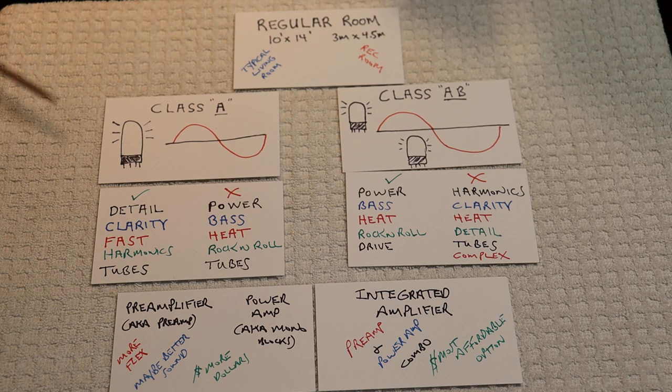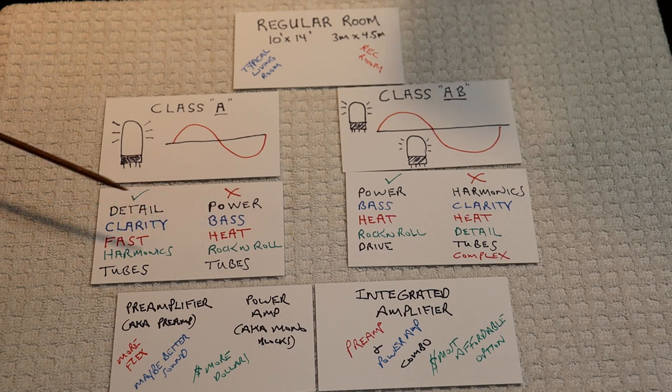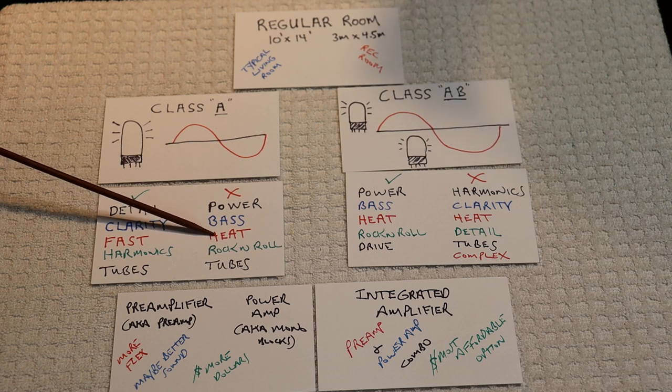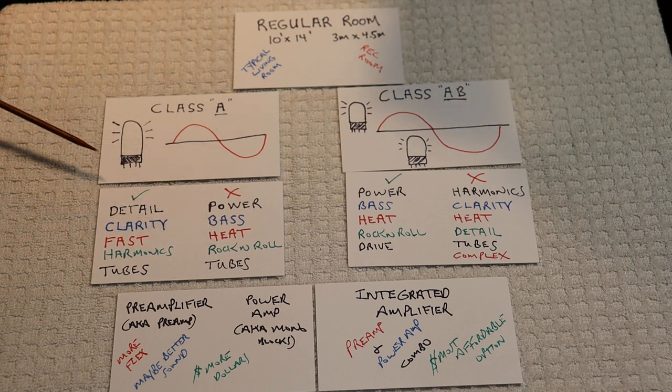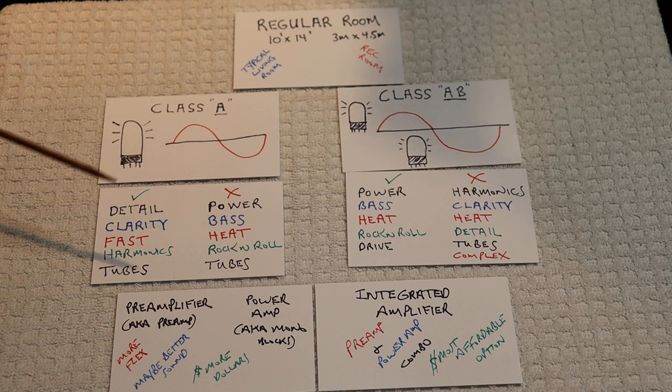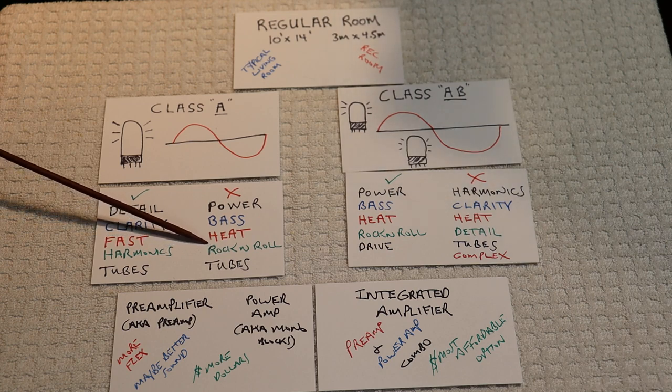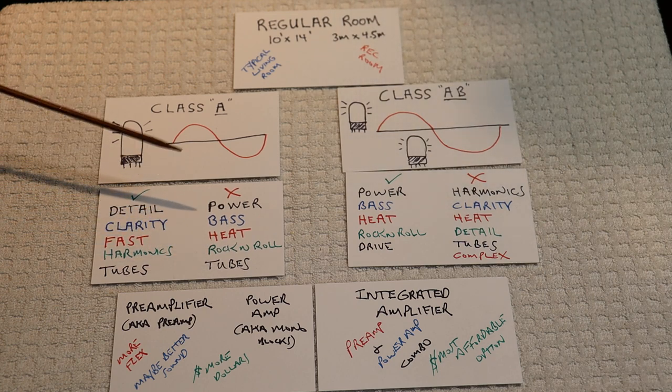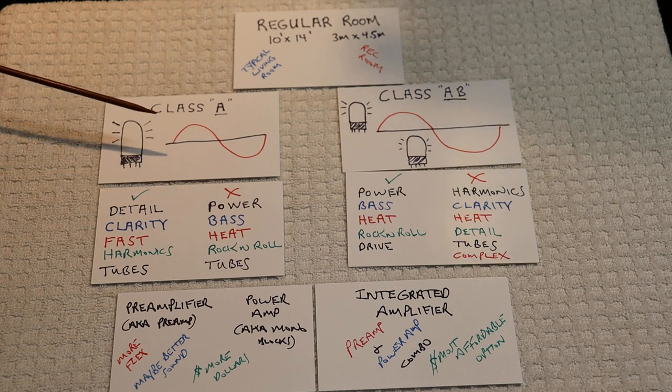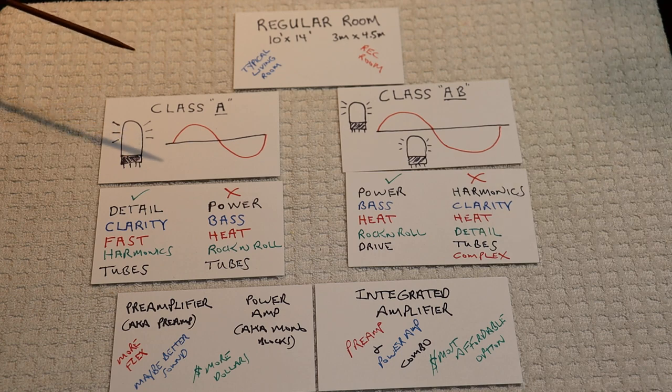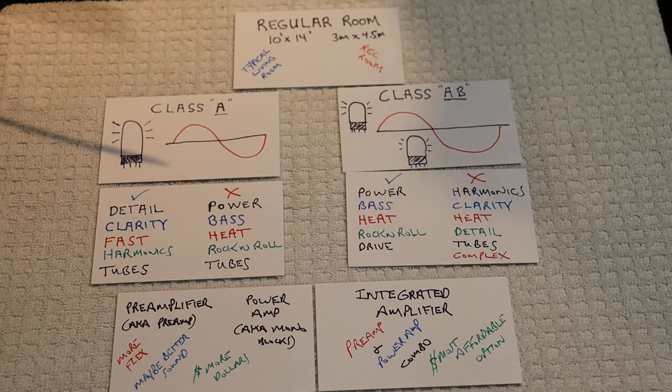You're going to get lovely harmonics, and you're not going to have to deal with too many tubes to buy. The negative of a Class A is you're not going to have as much power. You tend to have a little less bass. You're going to have tubes that are running full-time, 100% duty cycle. That's what Class A is. So you're going to have more heat, potentially, depending on how many tubes you've got. Class A is really not a great rock and roll amp. It's more for refined music: jazz, acoustic, vocal, small ensemble, traditional country, even electronica. If it's not too complex, it sounds amazing on Class A.